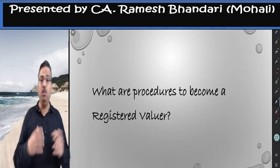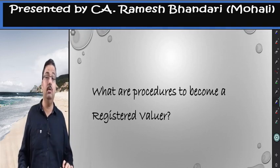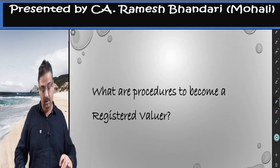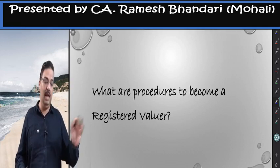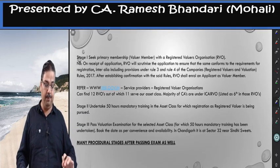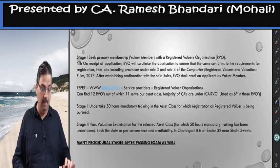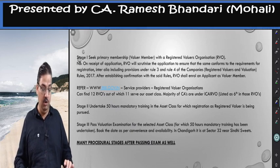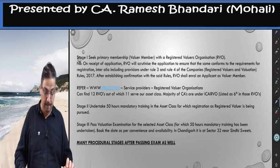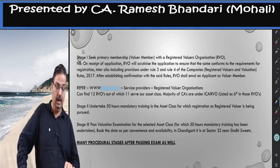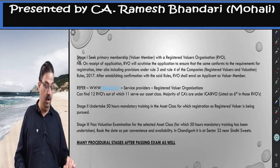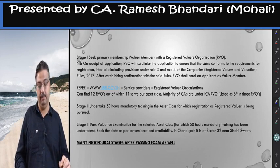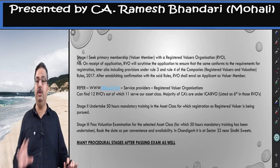Now I'm reaching procedures — how to become a registered valuer. There are three key steps before the exam, and more steps after passing which I'll cover lightly. The first step is to seek primary membership as a valuer member with an RVO. On receiving the application, the RVO will scrutinize it to ensure it conforms to the requirements including provisions of Rules 3 and 4 of the Companies (Registered Valuers and Valuation) Rules. After confirmation, the RVO shall enroll the applicant as a valuer member.